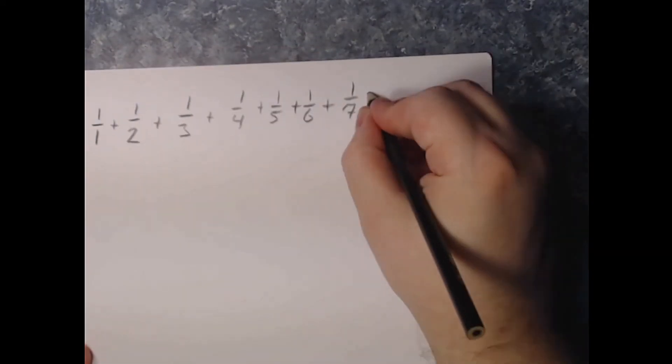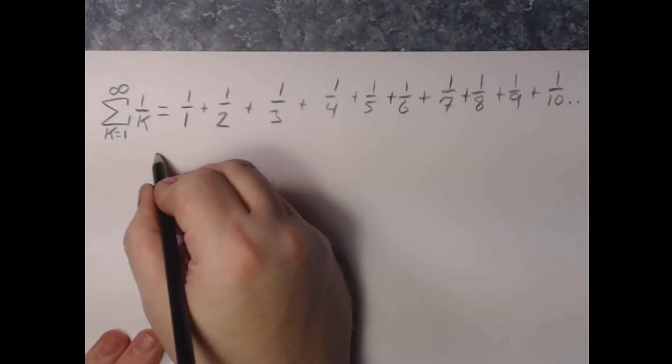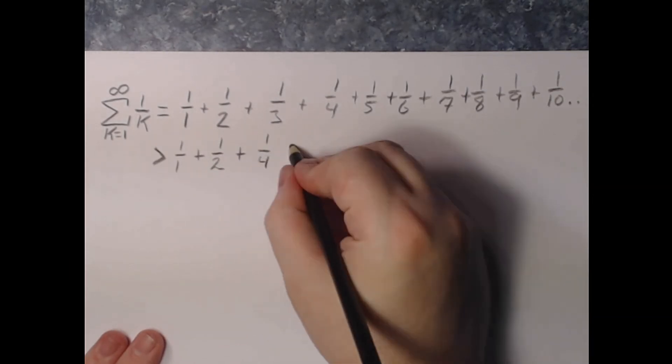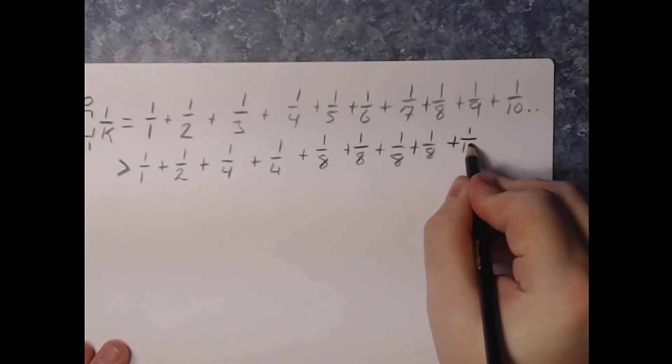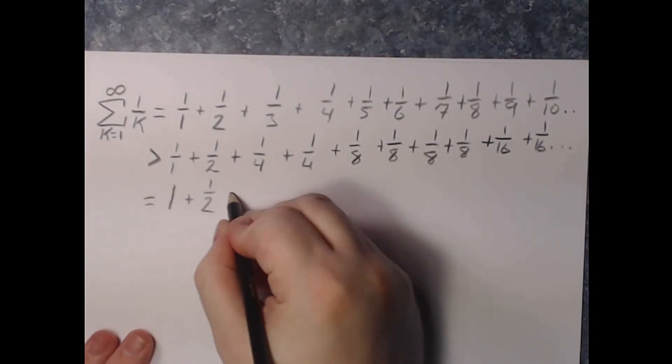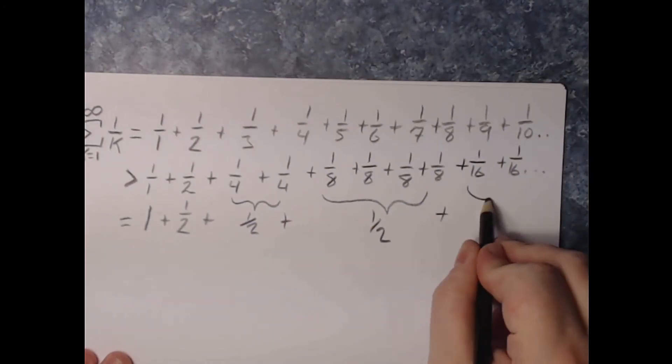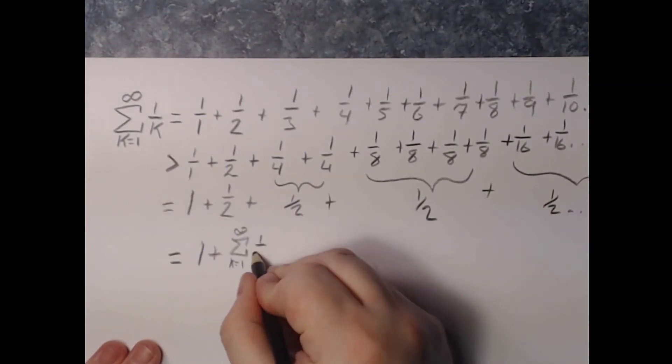Well, through a method called Cauchy condensation, we can compare this series to a smaller series, and in our case the smaller series diverges, meaning that by comparison the harmonic series must diverge, or this number goes to infinity.